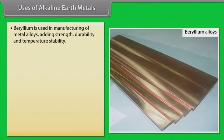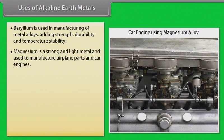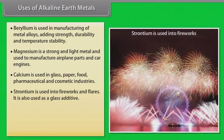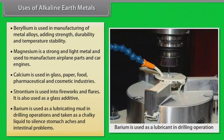Uses of alkaline earth metals. Beryllium is used in manufacturing of metal alloys, adding strength, durability and temperature stability. Magnesium is a strong and light metal and used to manufacture airplane parts and car engines. Calcium is used in glass, paper, food, pharmaceutical and cosmetic industries. Strontium is used into fireworks and flares. It is also used as a glass additive. Barium is used as a lubricating mud in drill operations and taken as a chalky liquid to silence stomach aches and intestinal problems.